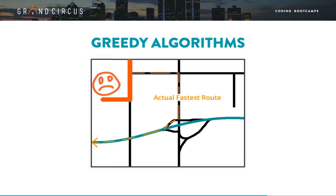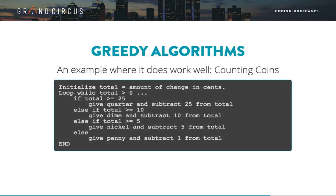But there are many situations where a greedy algorithm does give the right solution. Consider an algorithm to select the fewest coins to give as change. A greedy algorithm here would be to repeatedly give the coin with the largest possible value until the entire amount is given. Here's pseudocode for that algorithm.